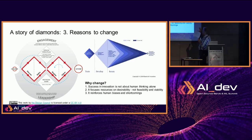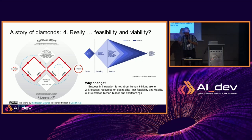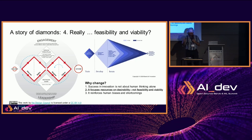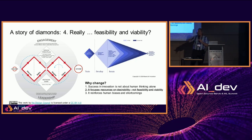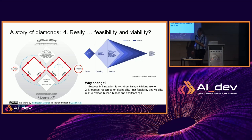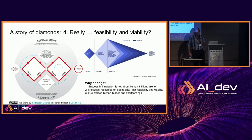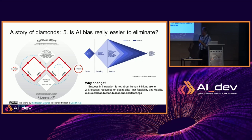They also think that the classic double diamond focuses resources on desirability and not on feasibility and viability — we do not agree with that. Desirability remains the main thing you want, and desirability is directly linked to the ethical aspect of development. The last reason they give is that the old model reinforces human biases and shortcomings. Well, the chance that AI does the same is at least as great, so that's not a good reason either.